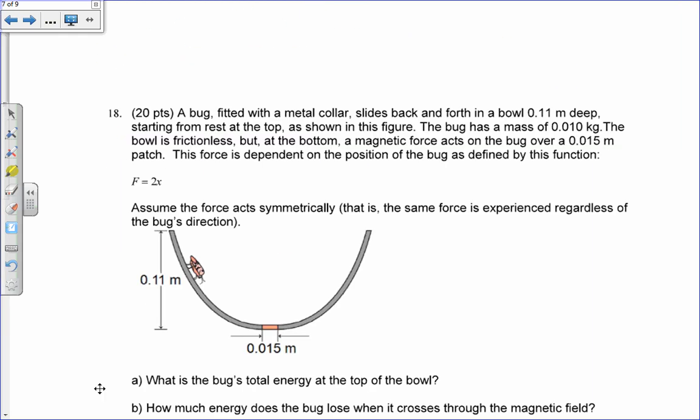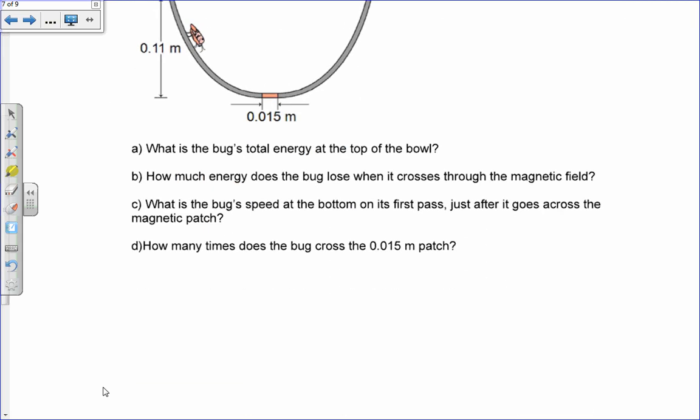Bug through a metal collar slides back and forth like this. There's the mass, magnetic force that acts over a particular distance. The force is given here. We first want to know what is the bug's total energy at the top of the bowl. Each of these was worth six for parts A through C. For the total energy for part A, it just has potential energy at the top. So it's just M times G times H. That is 0.01, that's the mass of the bug, times 9.8, times 0.11 meters. And I get the total energy to be 0.011 joules.